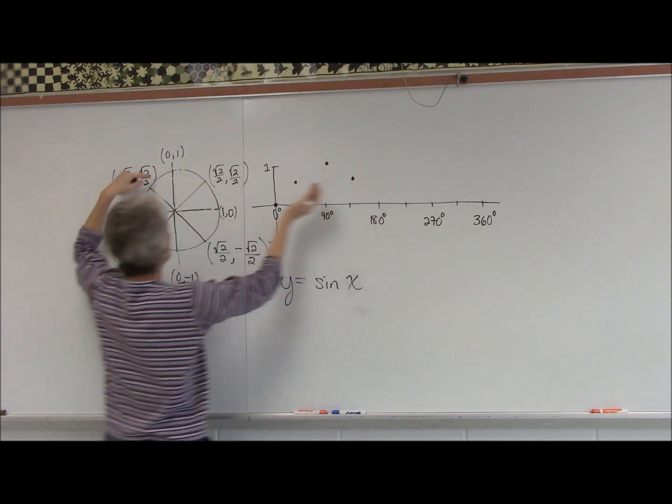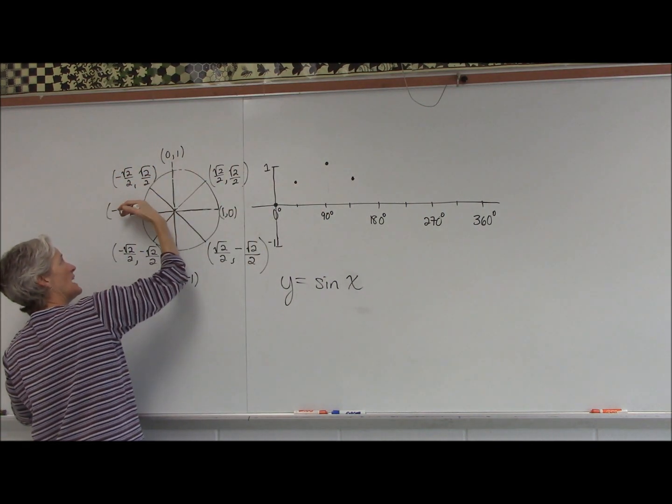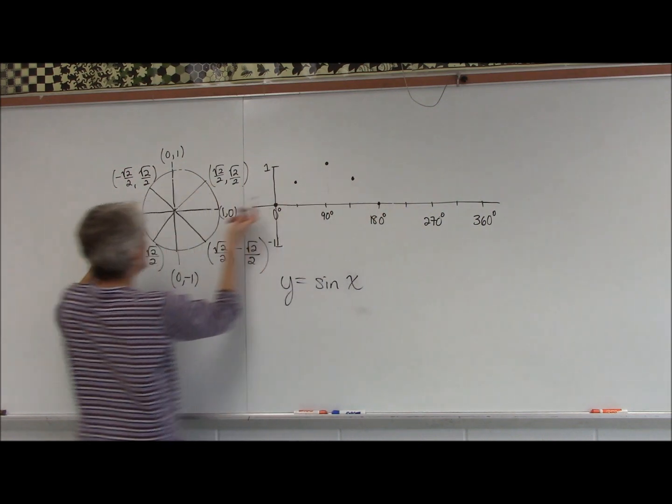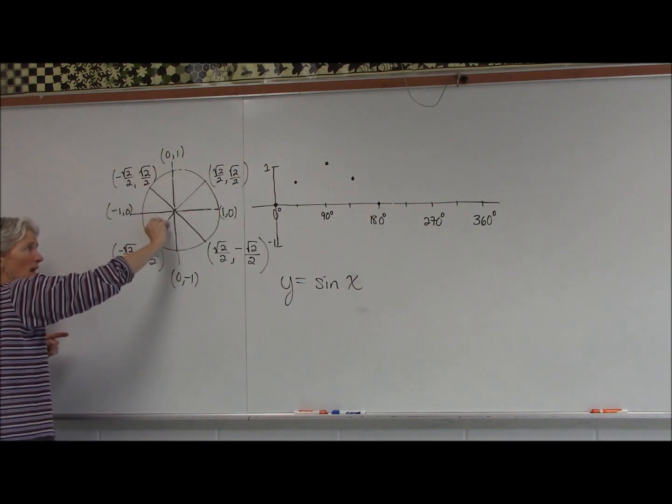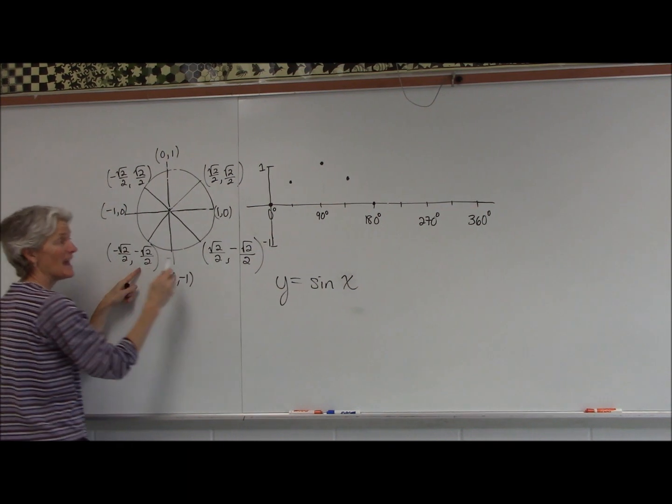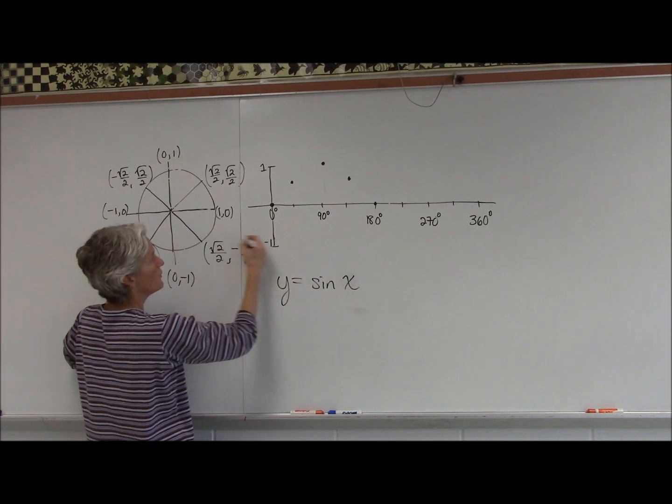Well, if I've rotated 180 degrees, that has a sine of zero again. If I'm rotating 225 degrees, that has a sine of negative square root of 2 over 2.